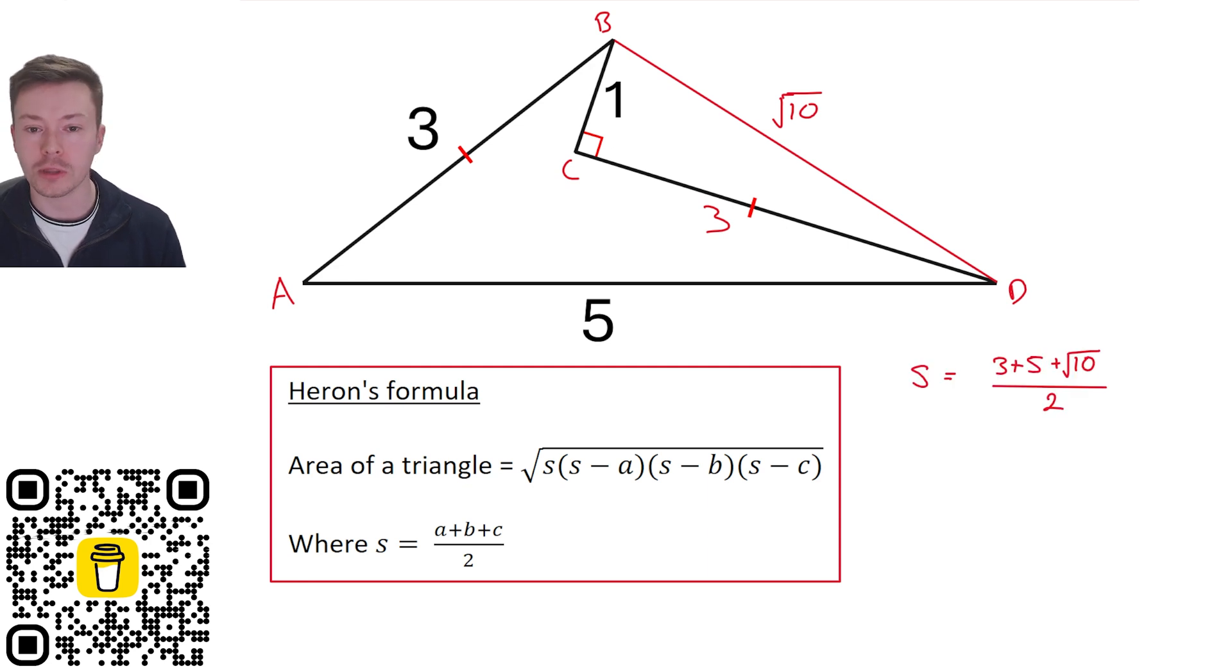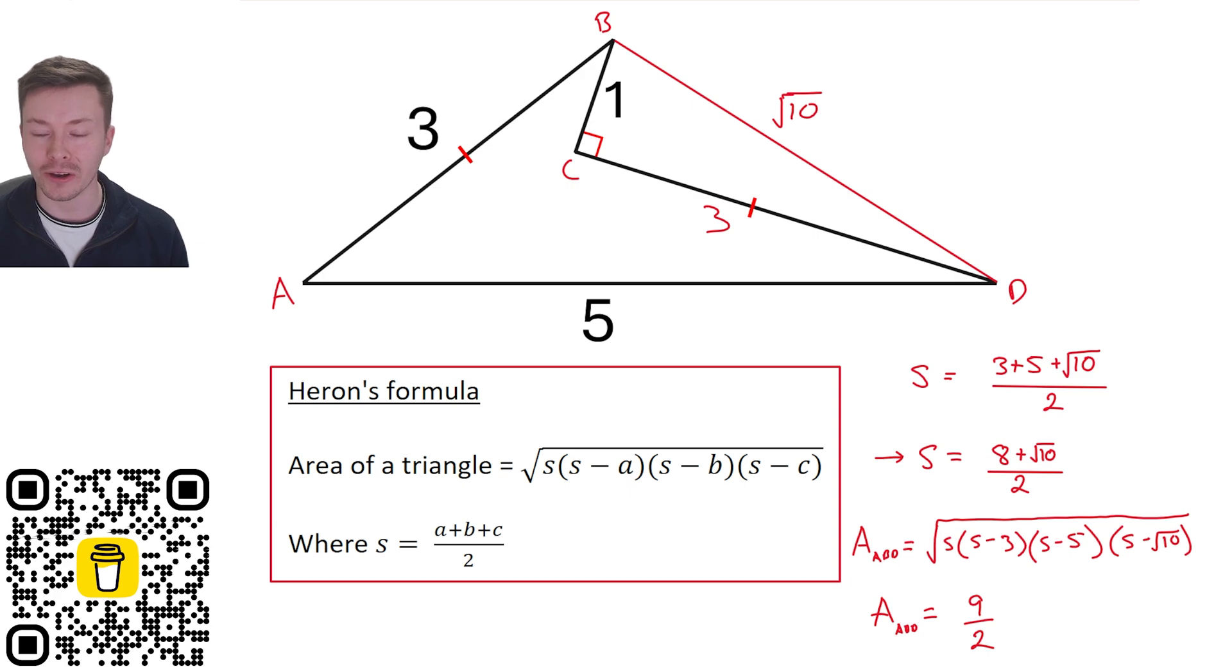Now to calculate S using this triangle, I've got three, add five, add root ten, all three sides of the triangle divided by two. I'm then going to use my answer button on my calculator and substitute it into Heron's formula. That is going to give me an answer of nine over two. So that's given me quite a nice answer.